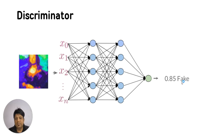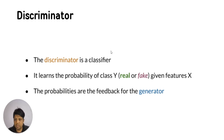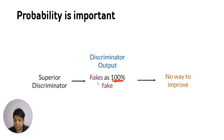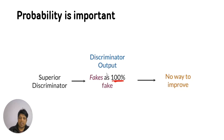The Discriminator is a classifier — it learns the probability of class Y (real or fake) given features X, and these probabilities are the feedback for the Generator. If the Discriminator just says it's fake or real without providing a probability, the Generator has no way to understand how much better an attempt it needs to make. So this probability is very important.